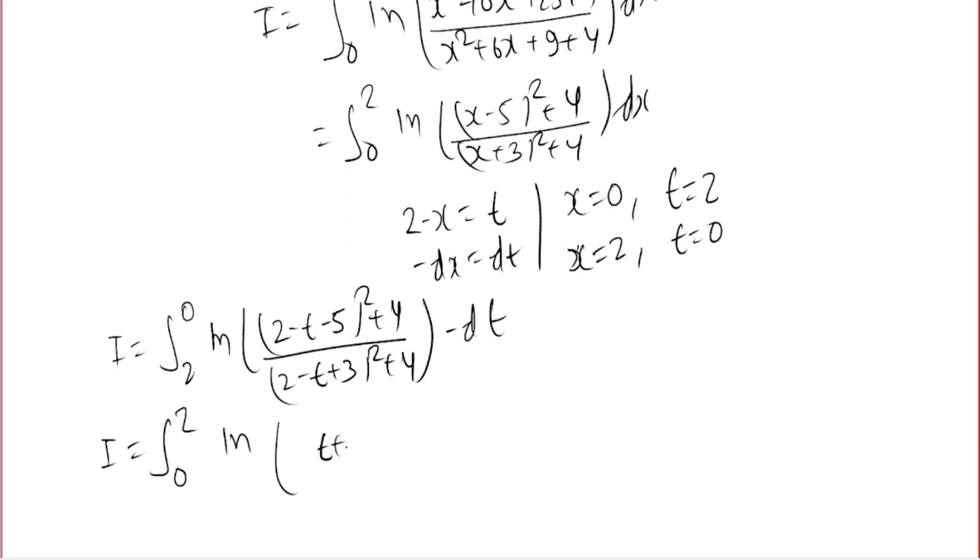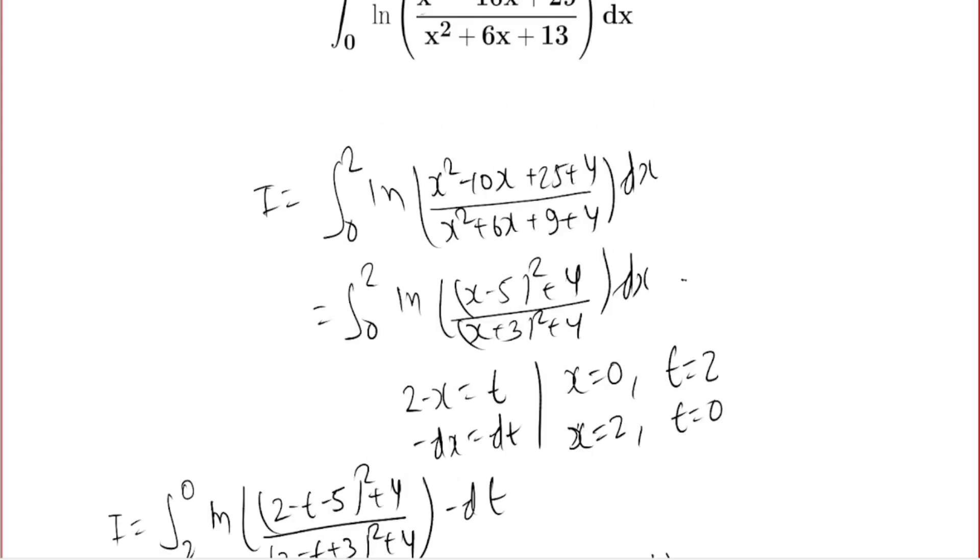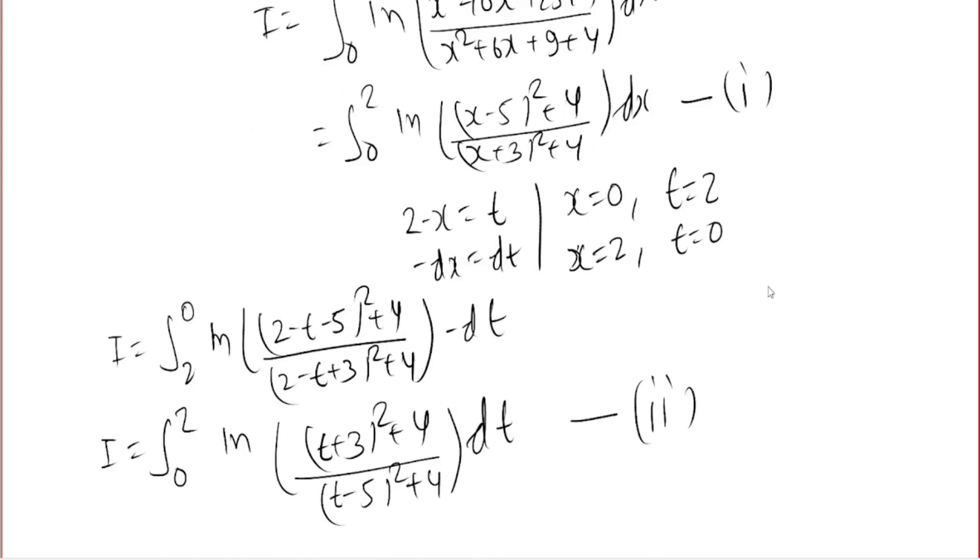In the denominator, we have (t - 5)² + 4, dt. Let's consider this as the second equation, and the original one as our first equation.